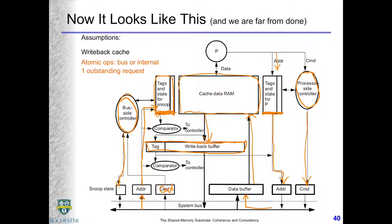Because the write-back buffer is part of the cache — not in the regular array, but still there — the comparator has to cover both the tag for the regular cache array and whatever is in the write-back buffer. This is how it works: these components work together to snoop. Because of this write-back and the potential of putting cache lines into the write-back buffer, you're going to have multi-step transactions, which involves the notion of transient state.